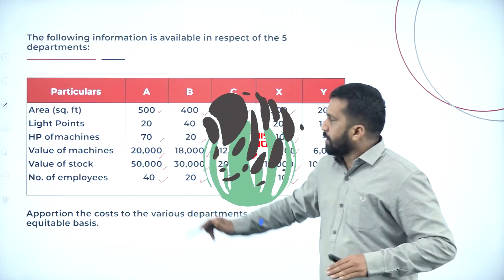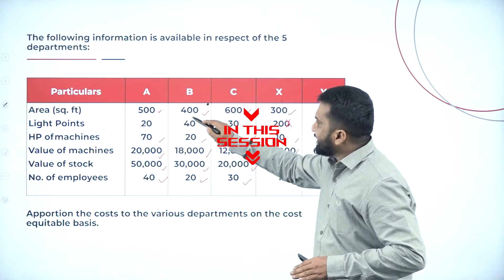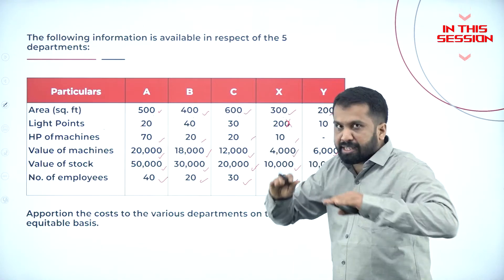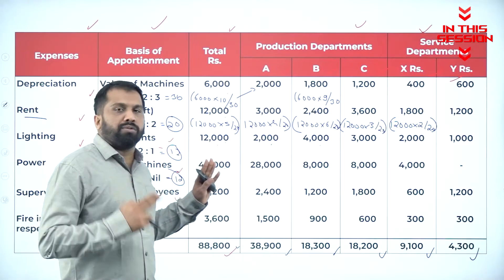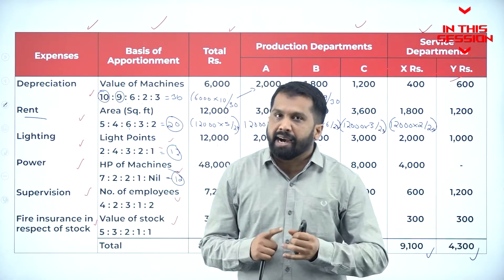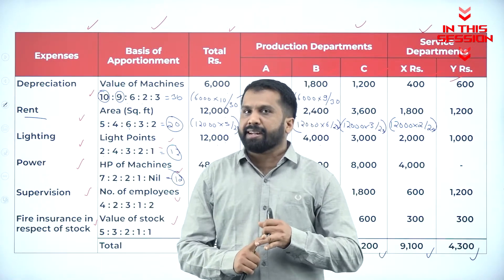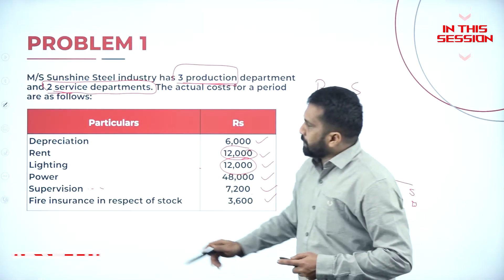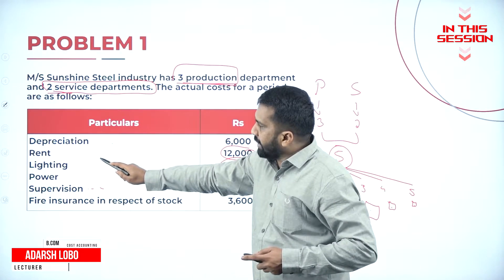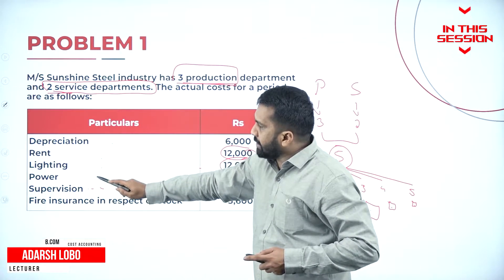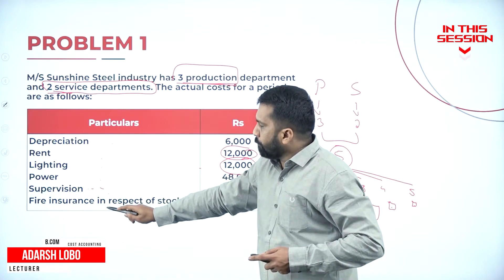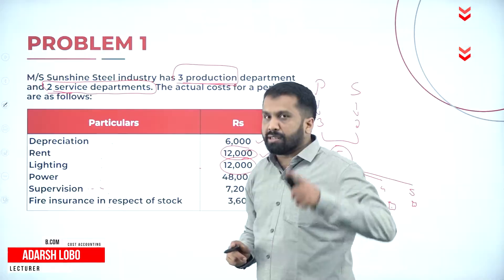We don't want big numbers. Make it simple. There are two things: one is primary, another one is secondary. Your expenses include depreciation, rent, lighting, power, supervision, and fire insurance.